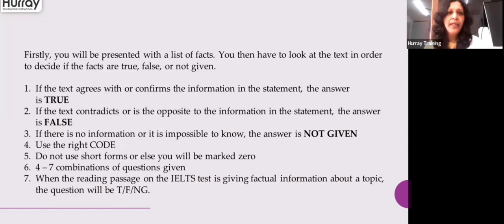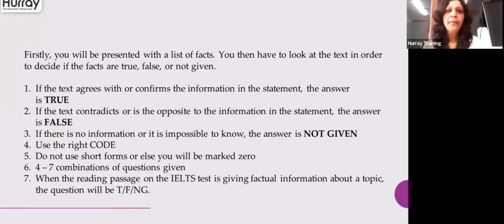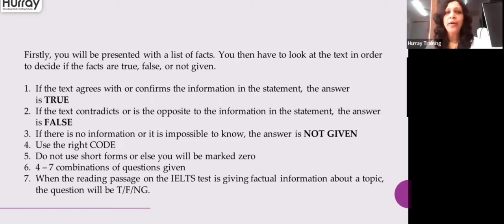The next point is: use the right code. If the question is Yes, No, Not Given, write yes, no, not given. If it is True, False, Not Given, write true, false, not given. Do not write short forms like T, F, and NG — write the full word. For reading, you write all answers in your OMR sheet in capital letters with a pencil so that the letters are clear.